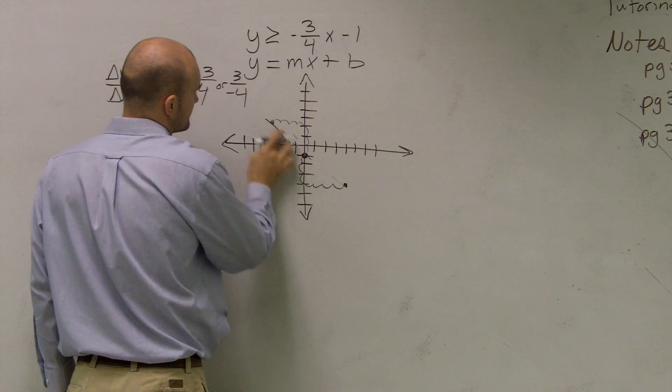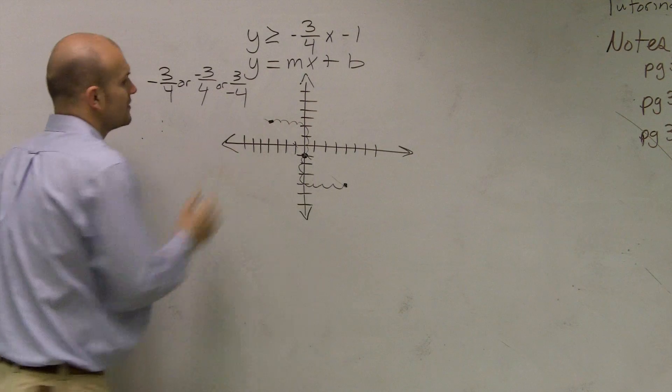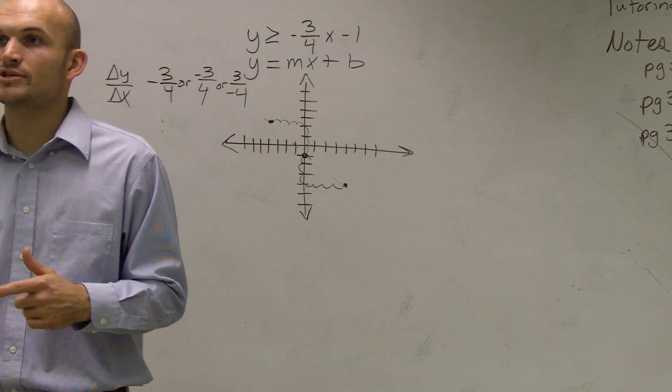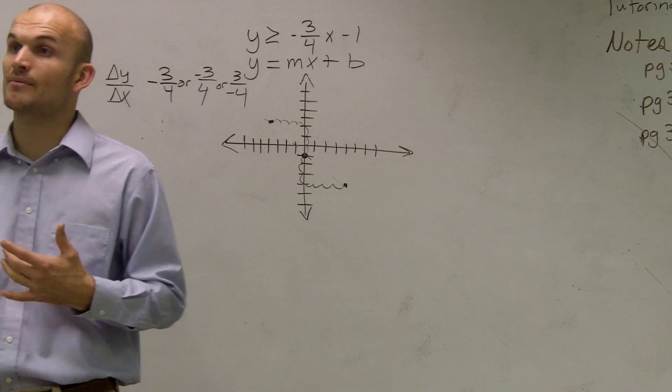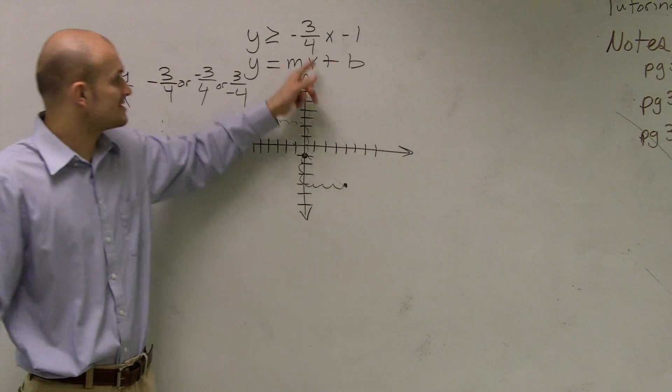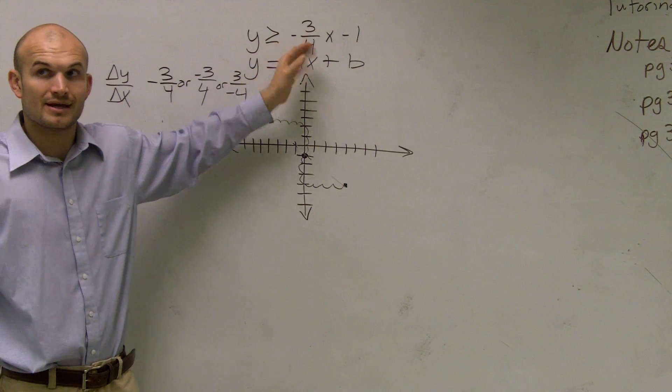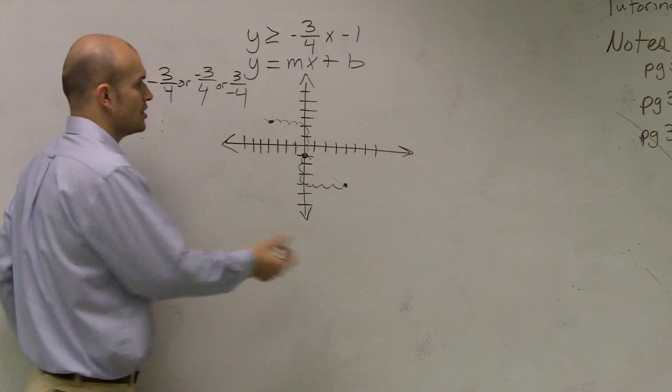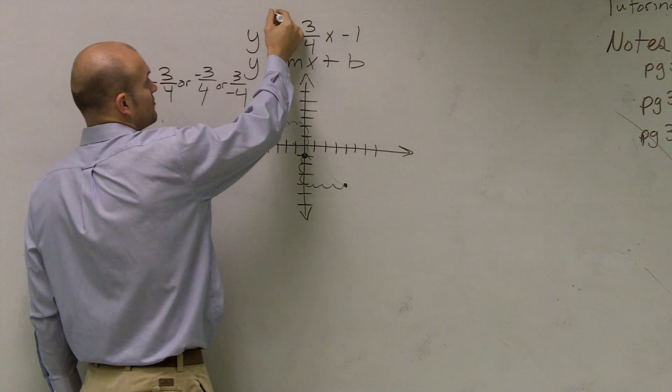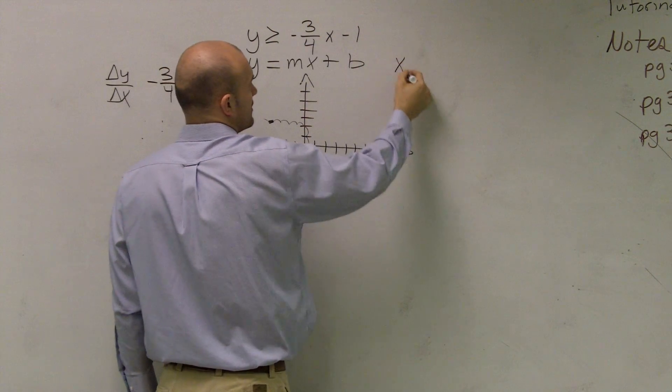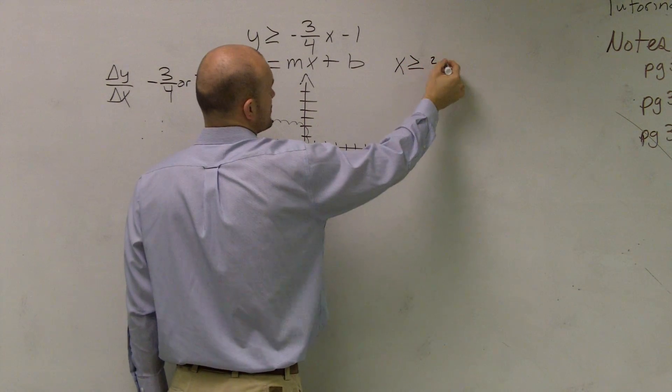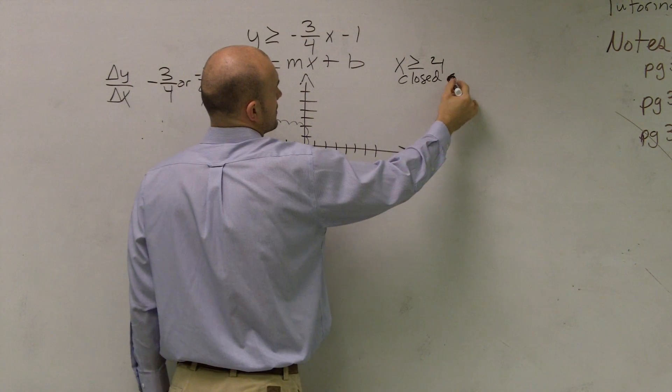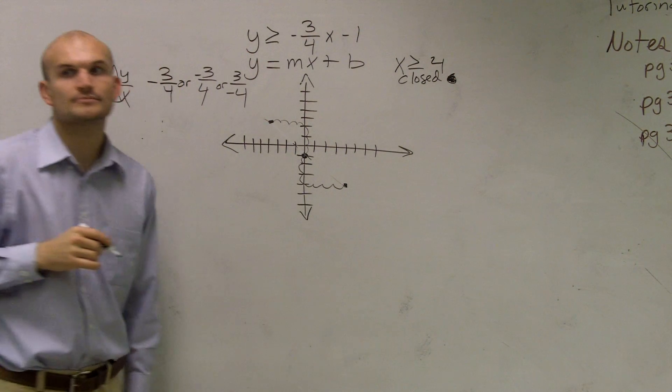Okay, before I graph it. Sorry, I got a little ahead of myself. Now before I actually make my line, I need to determine, is my line going to be a part of my solution or not a part of my solution? And since this is greater than or equal to, if it's on my line, it's going to be a part of it. So remember, just like if this is greater than equal to, remember this is what we call a closed dot. X equal to 4, that was a closed dot. We filled it in.